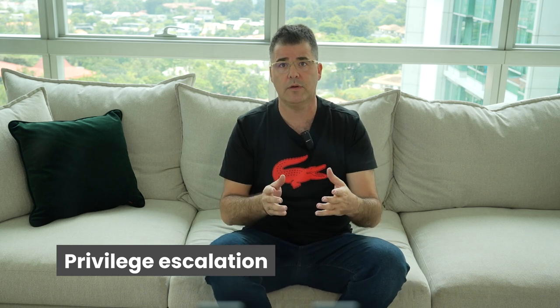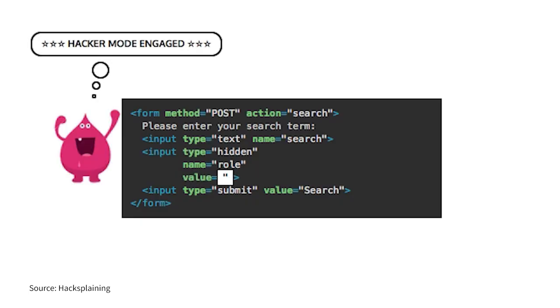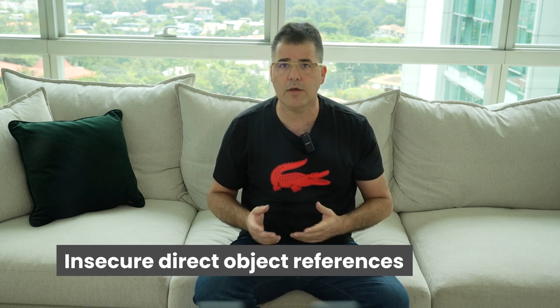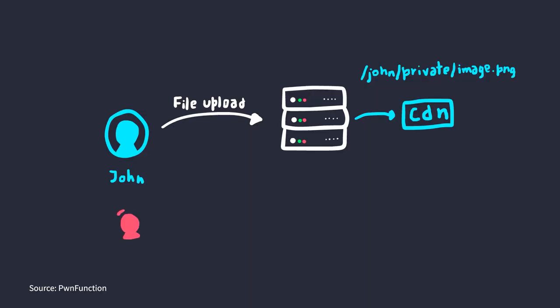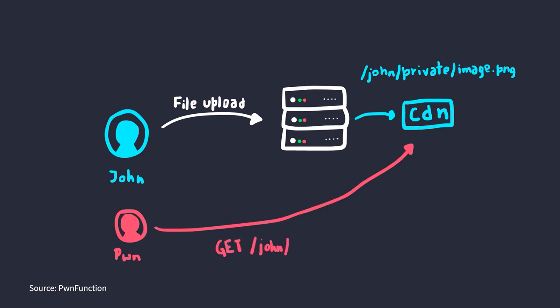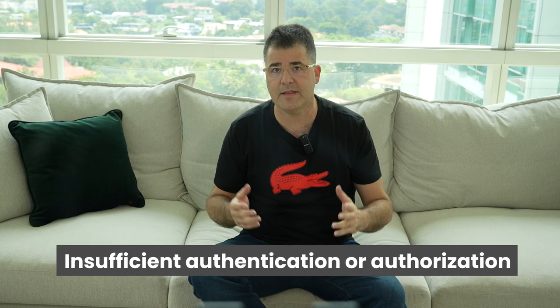There are six types of access control vulnerabilities worth discussing. The first is privilege escalation — this occurs when a user gains access to resources or functionality beyond their authorized level, for example by exploiting a vulnerability to elevate their privileges. The second is insecure direct object references — this occurs when an attacker accesses a resource directly without proper authorization, such as guessing the URL or ID of a file to bypass access control checks.